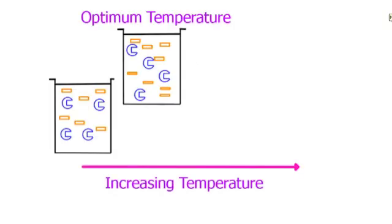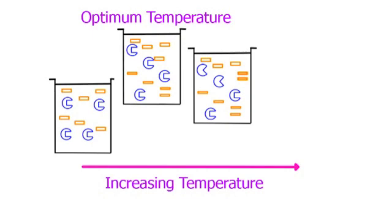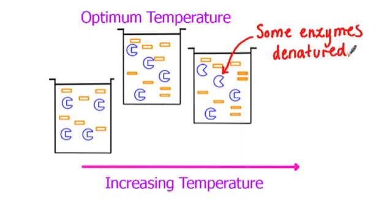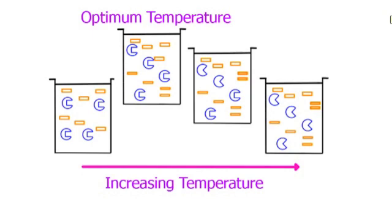There comes a point at which the maximum rate of reaction is achieved and the temperature at which this occurs is known as the optimum temperature. If the temperature continues to increase beyond the optimum, the enzymes begin to lose their three-dimensional structure and become denatured, therefore reducing the rate of reaction.